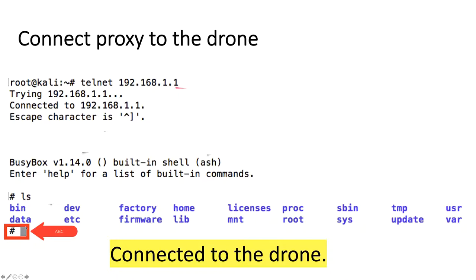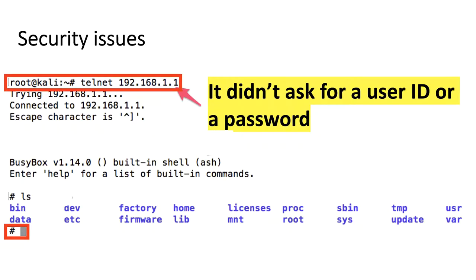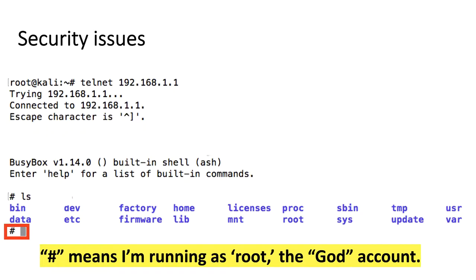I want you to pause and think about what's missing here. There are two big issues. First, nowhere when connecting to the drone did it ask for a user ID or a password. Second, notice this prompt — that hash symbol means I'm running as root. Root is similar to the administrator account in Windows. The administrator can do anything: install programs, remove programs, change system files. Essentially, we're running as the God account on the drone.